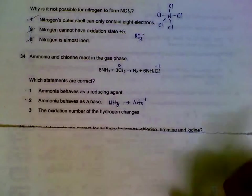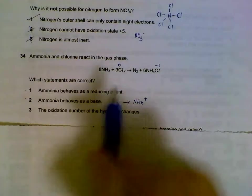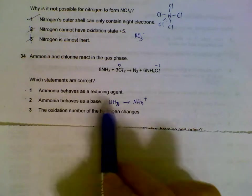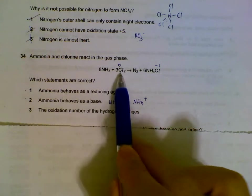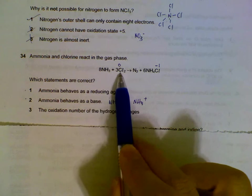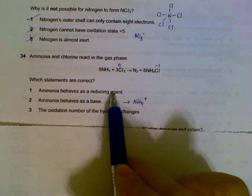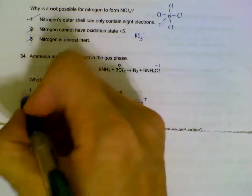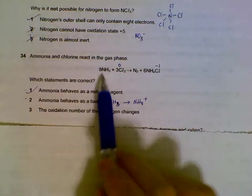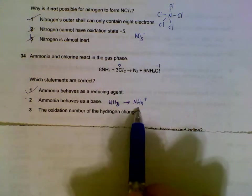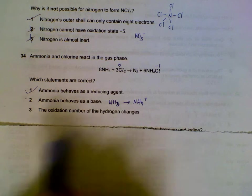Question 34: Ammonia and chlorine. Ammonia behaves like a reducing agent. You can check: chlorine has zero oxidation number, then becomes minus one. Chlorine is being reduced, so ammonia is a reducing agent. Ammonia becomes ammonium—it accepts a proton, so it behaves like a base.